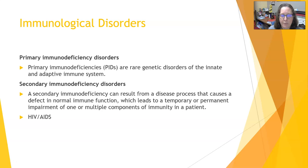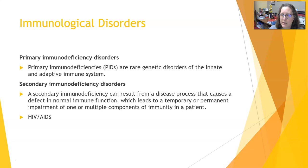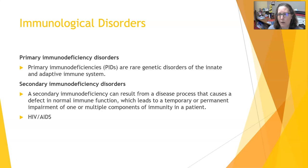Secondary immunodeficiency disorders result from a disease process causing a defect in normal immune function, leading to temporary or permanent impairment of immunity. An example is HIV/AIDS — the HIV virus infects lymphocytes and monocytes, crippling the T helper cell. As T helper cell numbers decline, the ability to mount an immune response deteriorates and the patient can develop AIDS. A temporary example is chemotherapy and radiation therapy, which depresses all cells of the bone marrow. Once therapy stops, the bone marrow often rebuilds; if not, a bone marrow transplant may be needed.